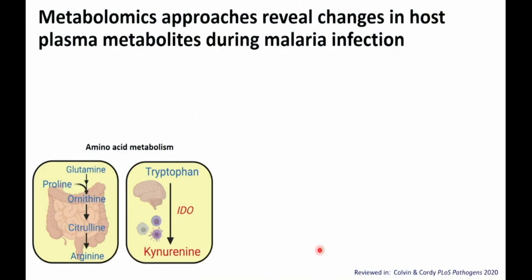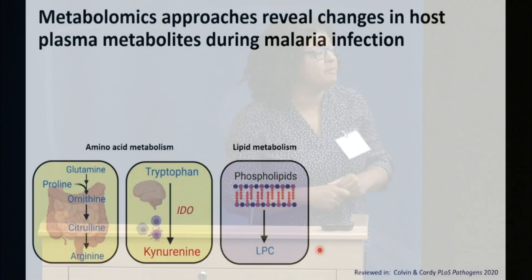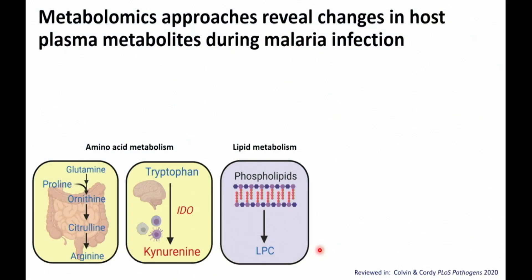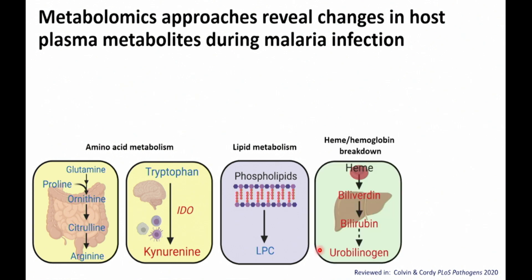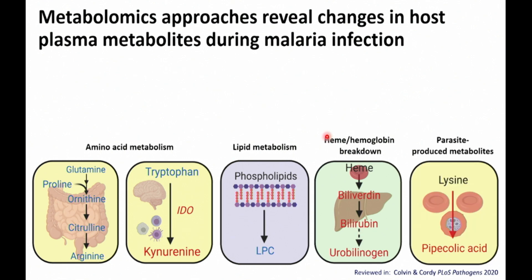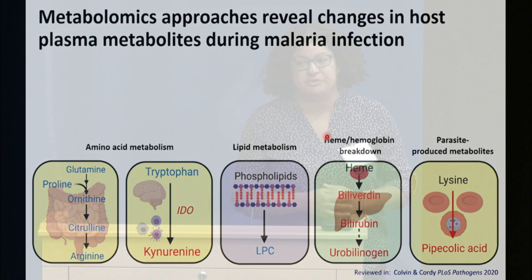Glutamine, proline, ornithine, citrulline, arginine — some of these amino acid perturbations also involve a conversion event. For example, tryptophan is converted to kynurenine through the IDO pathway, which is involved in immune suppression but also has some neurotoxic effects. There's also a lot of literature on the lipid perturbations during malaria, including lysophosphatidylcholine species being perturbed in the bloodstream, which can impact gametocyte development. This disease causes a large amount of red blood cell lysis, so heme and hemoglobin breakdown products are found in the bloodstream during infection. Parasites themselves also produce metabolites not normally found at high abundance — lysine being converted to pipecolic acid is one example.